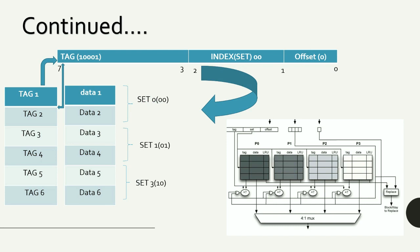The tag is used to fetch the right data out of the two cache blocks within the set. Here is an example of a four-way set associative cache where each set consists of four cache lines or cache blocks. You can have two-way, four-way, or eight-way set associative caches.